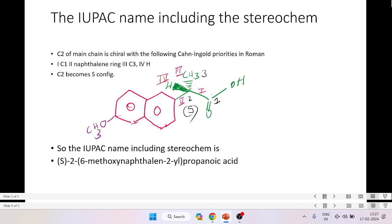We can see that the C2 of the main chain is a chiral carbon. You see all four different substituents - you have got the carboxyl group, you have got the naphthalene ring, you have got the methyl group as well as the hydrogen. So this is a chiral carbon, and it is seen that the S-isomer is the one that is the pharmaceutically active component.